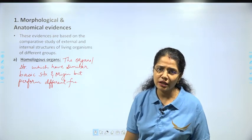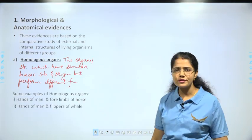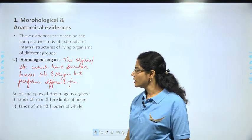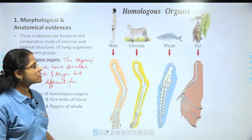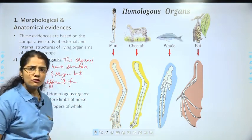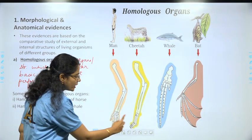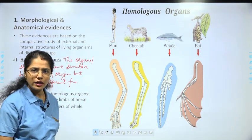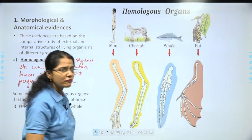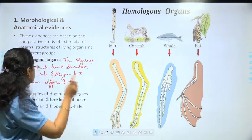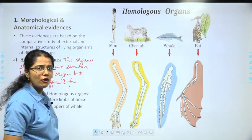Let us understand homologous organs with examples. Consider the hands of a man and the forelimbs of a horse or cheetah. If you look at their structure, they are pretty much similar. But our hands do not help us in running, whereas the forelimb of a cheetah is used when it runs. So, same basic structure and origin but different functions — this relates directly to the definition of homologous organs.